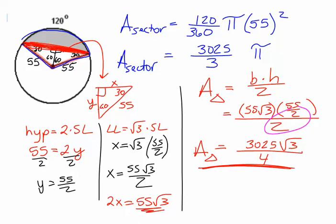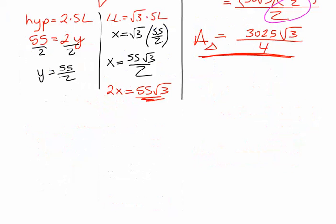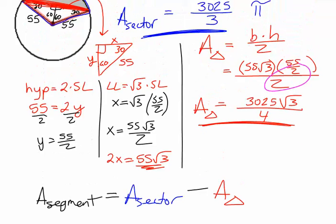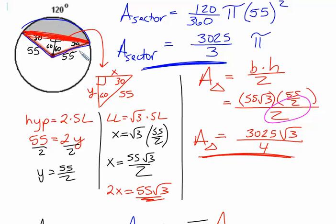Notice how clearly I'm labeling my work. Please do the same. And then the area of the segment, which is the shaded part, is going to be the area of our sector minus the area of the triangle. Just think about where the shaded area is in our problem as we look back up. It would be the full sector, the piece of pizza, minus the triangle.